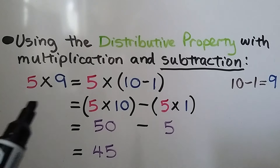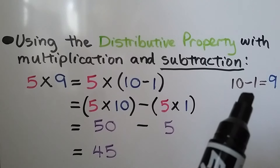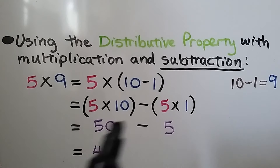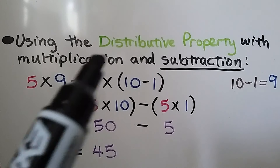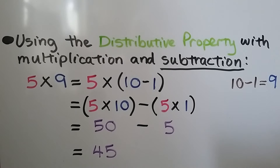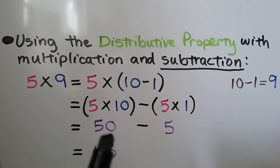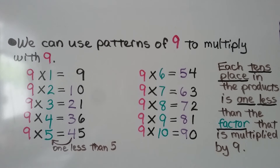Using the distributive property with multiplication and subtraction: 5 times 9 equals 5 times (10 minus 1), because 10 minus 1 equals 9. We distribute: 5 times 10 minus 5 times 1. 5 times 10 is 50, minus 5 times 1 which is 5. 50 minus 5 equals 45.